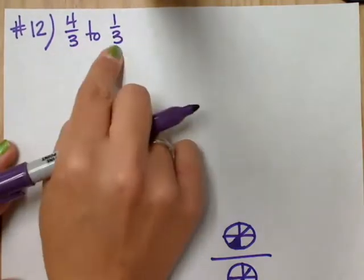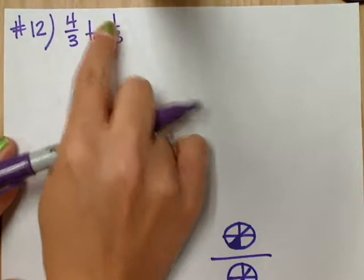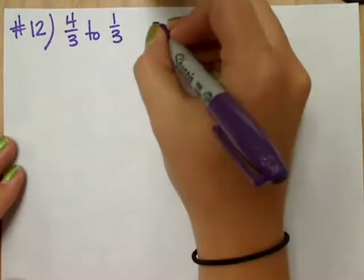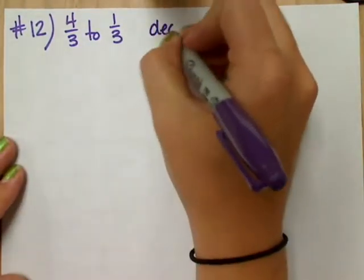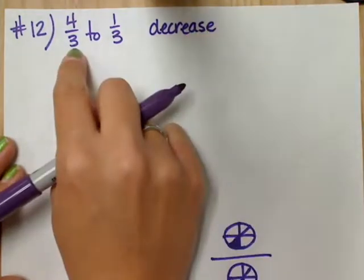Now we can compare to decide if it's an increase or a decrease. It's four-thirds to one-third. What is that? Decrease. Good, decrease.